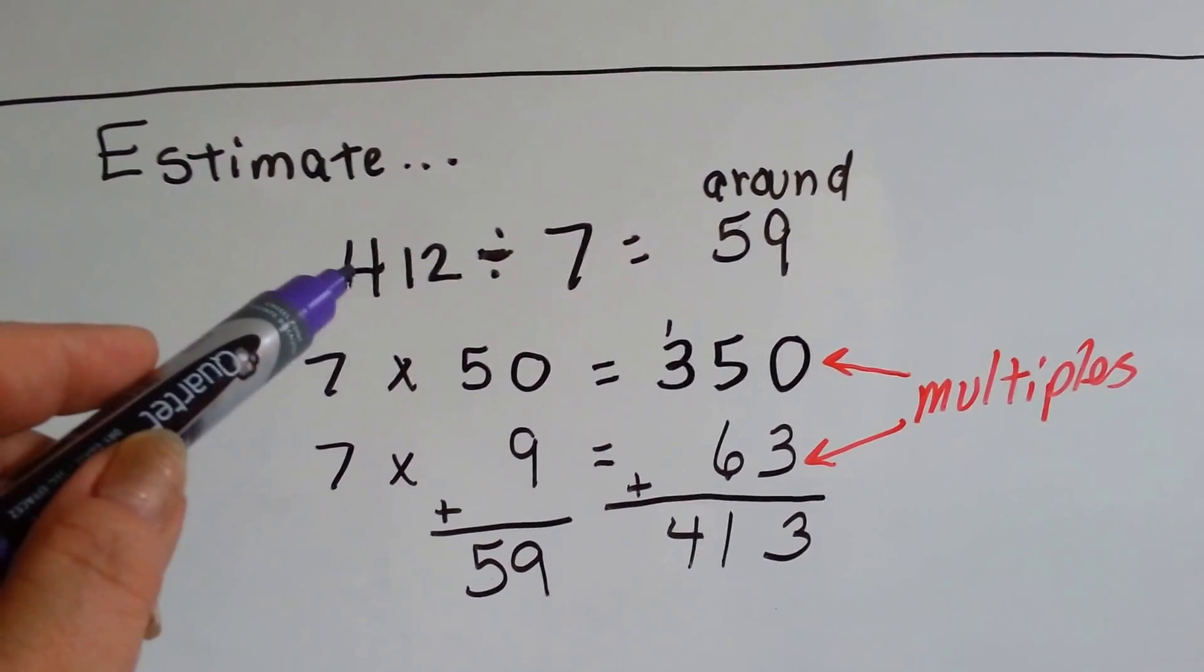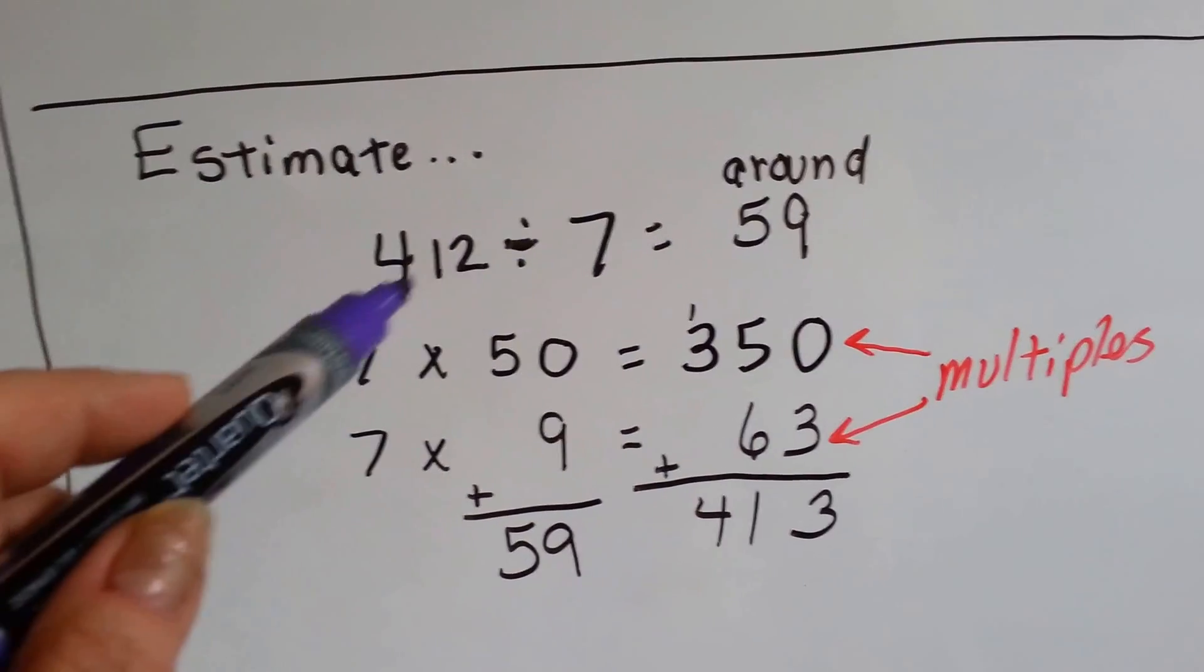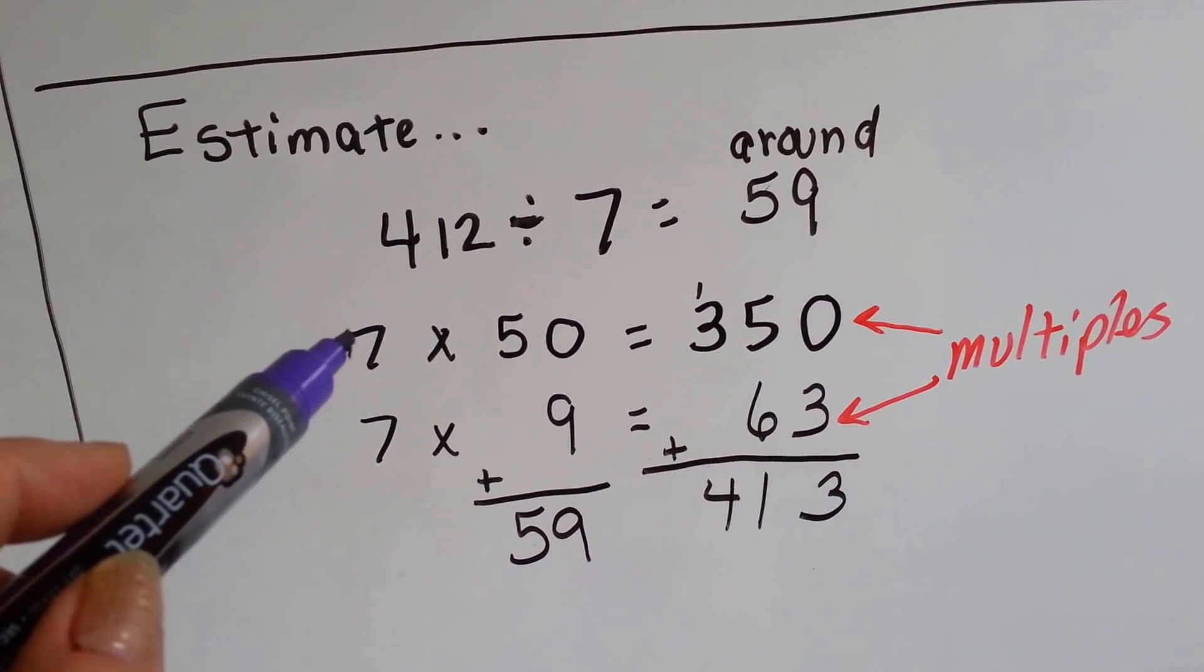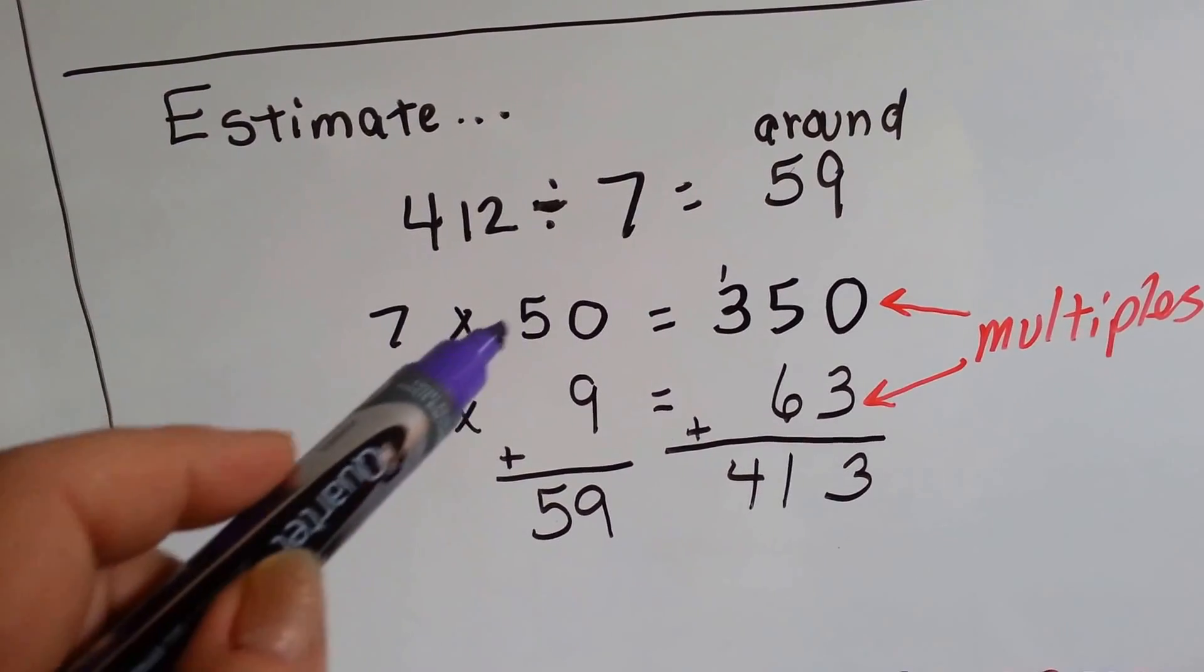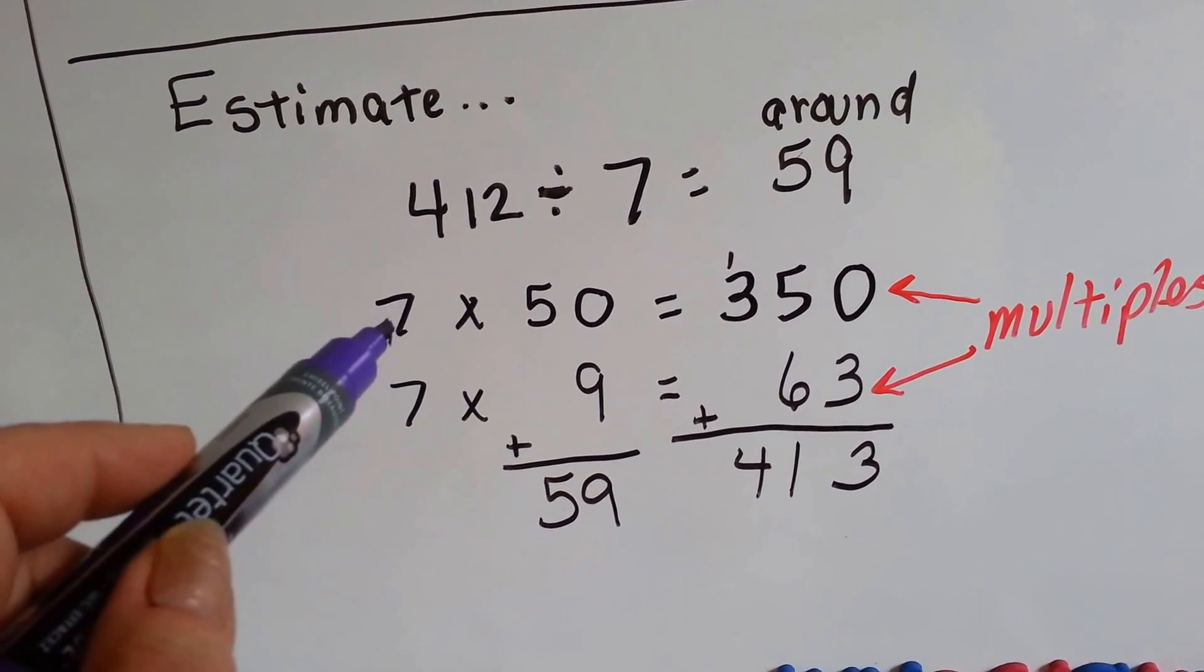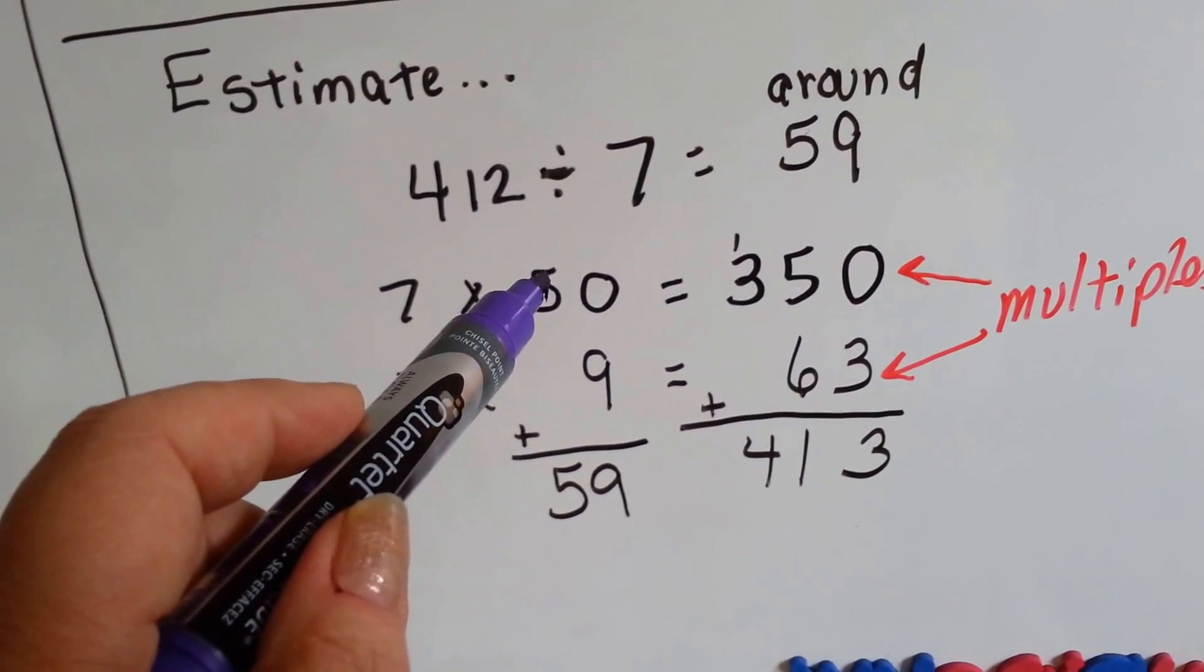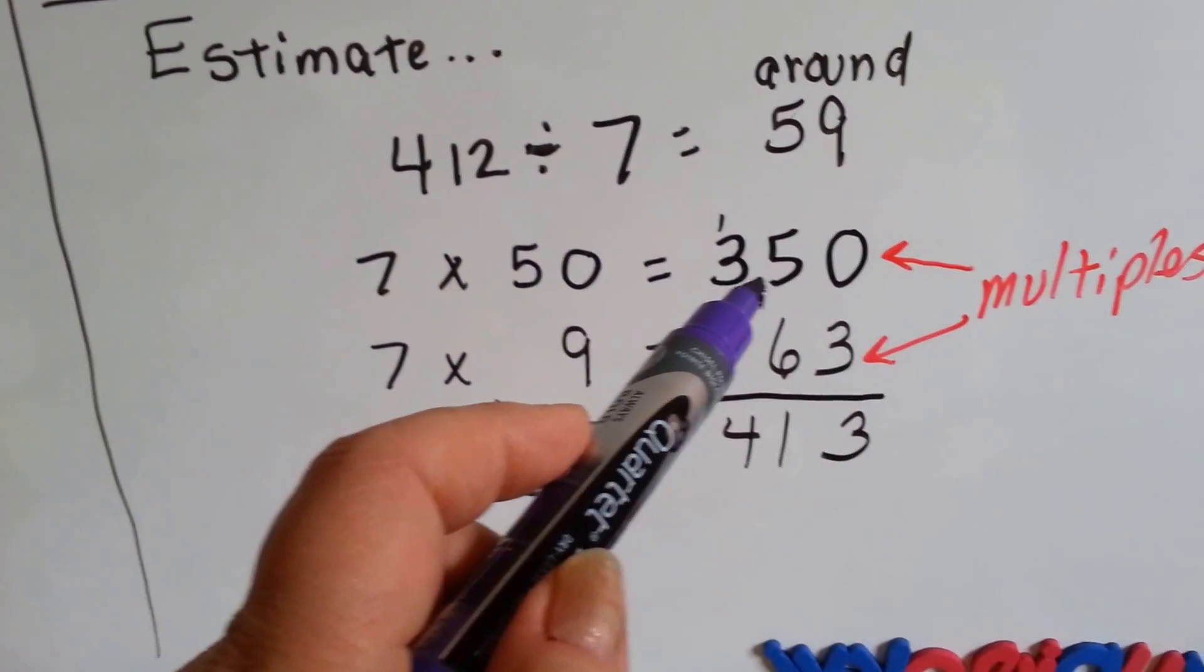We have 412 divided by 7. Well, that's a pretty big number, 412. But do you remember what I taught you in the other videos? You can multiply a large number, like 50, by just multiplying the 10 to the 7 and then adding the 0 later. 7 times 5 is 35. Put the 0 at the back and we now have 350.